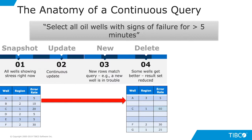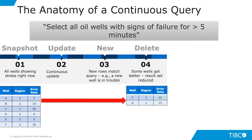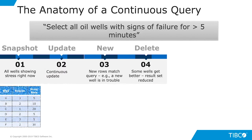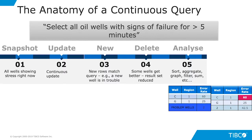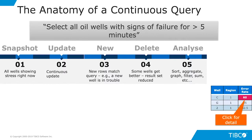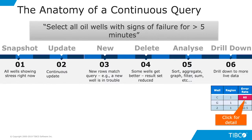Or maybe somebody makes a change and fixes the well, and then that result set is reduced again. This whole processing chain is continuous and live to the end user — they're just seeing the live results changing interactively, but they're able to process how things are getting better or worse, more urgent or less urgent.